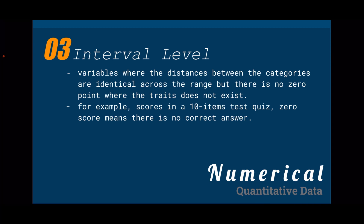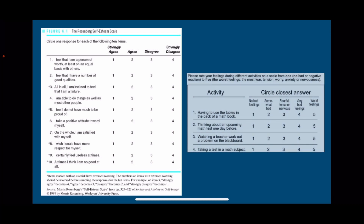Other examples are personality inventories and temperature in Fahrenheit or Celsius. The difference between any two adjacent temperatures is the same — one degree — but zero degrees is defined differently depending on the scale, and it does not mean an absolute absence of temperature. The research instruments shown here, such as the Rosenberg Self-Esteem Scale, are examples that could produce interval data.